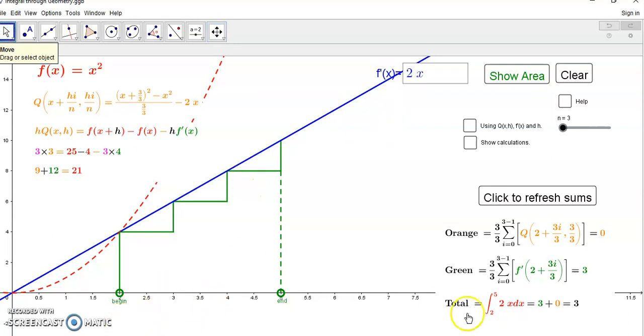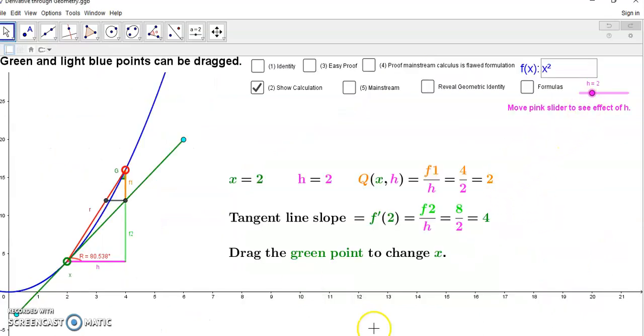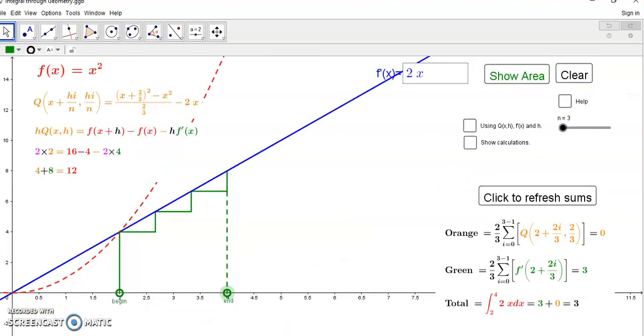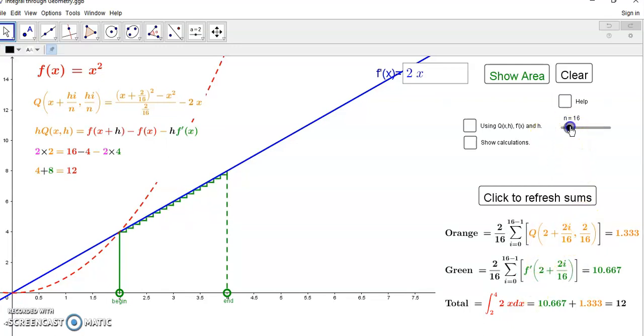So we want to find the area between 2 and 4, and we know that it's going to be 12. We can refresh the sums here and we'll see that it's also 12. Now notice this is done in terms of the interval. So if I have more intervals these values here will obviously change, but the ultimate area stays the same.